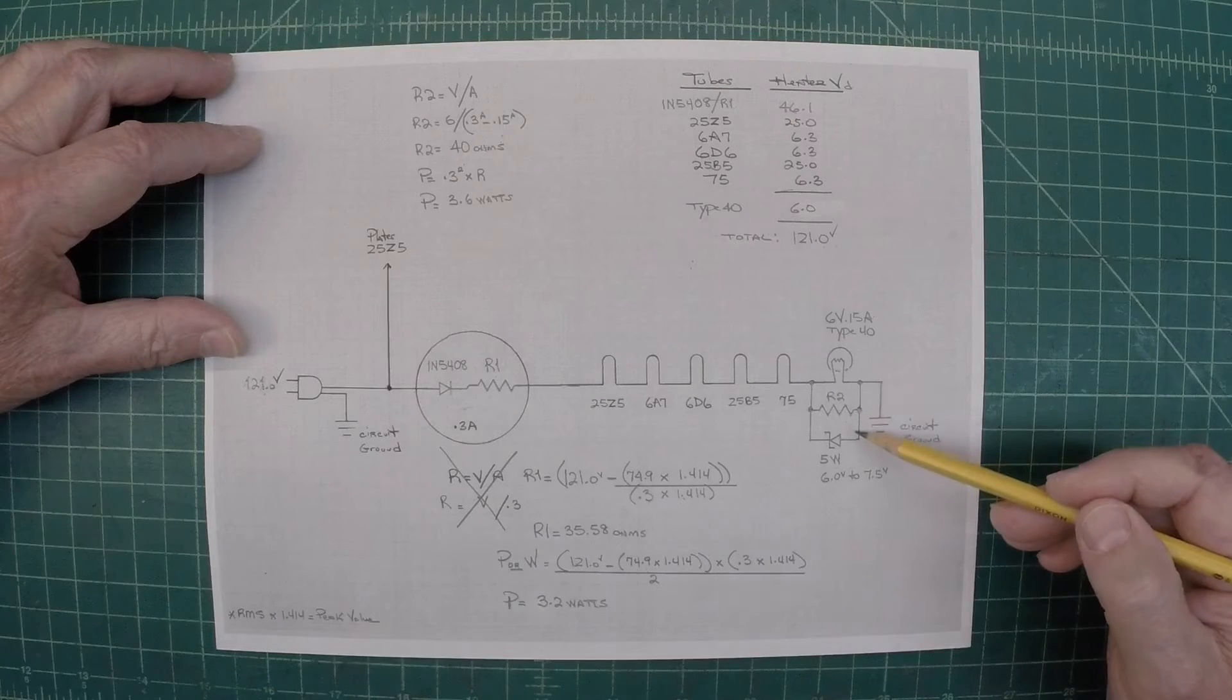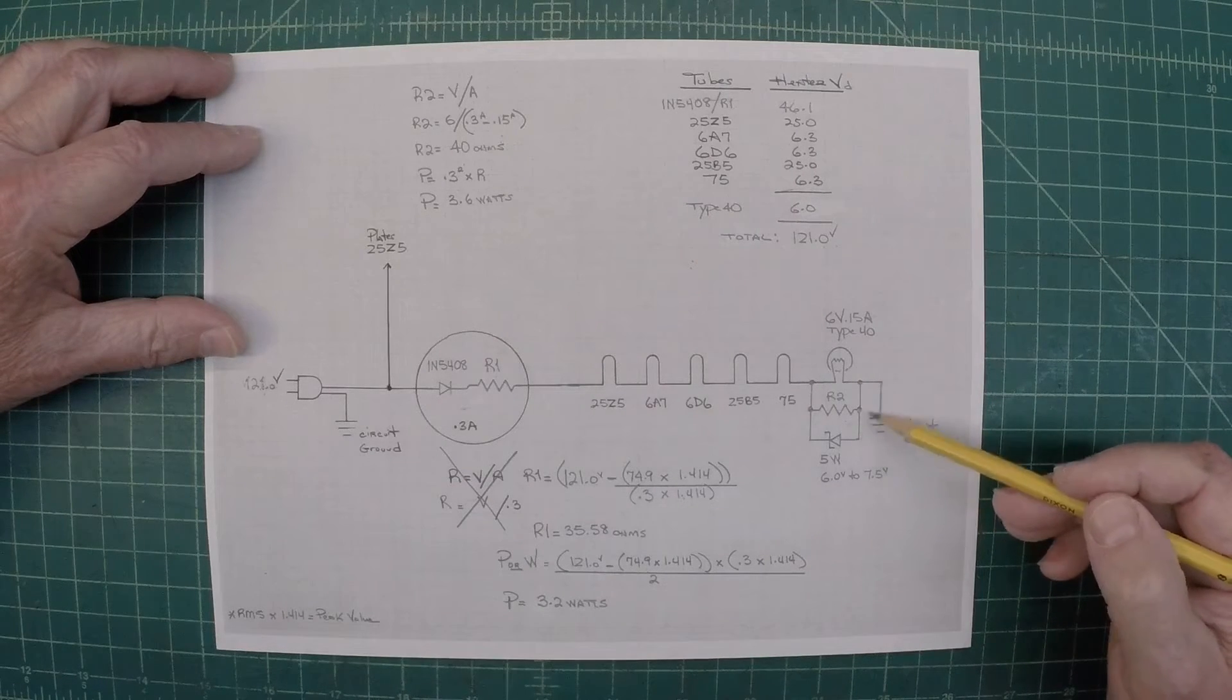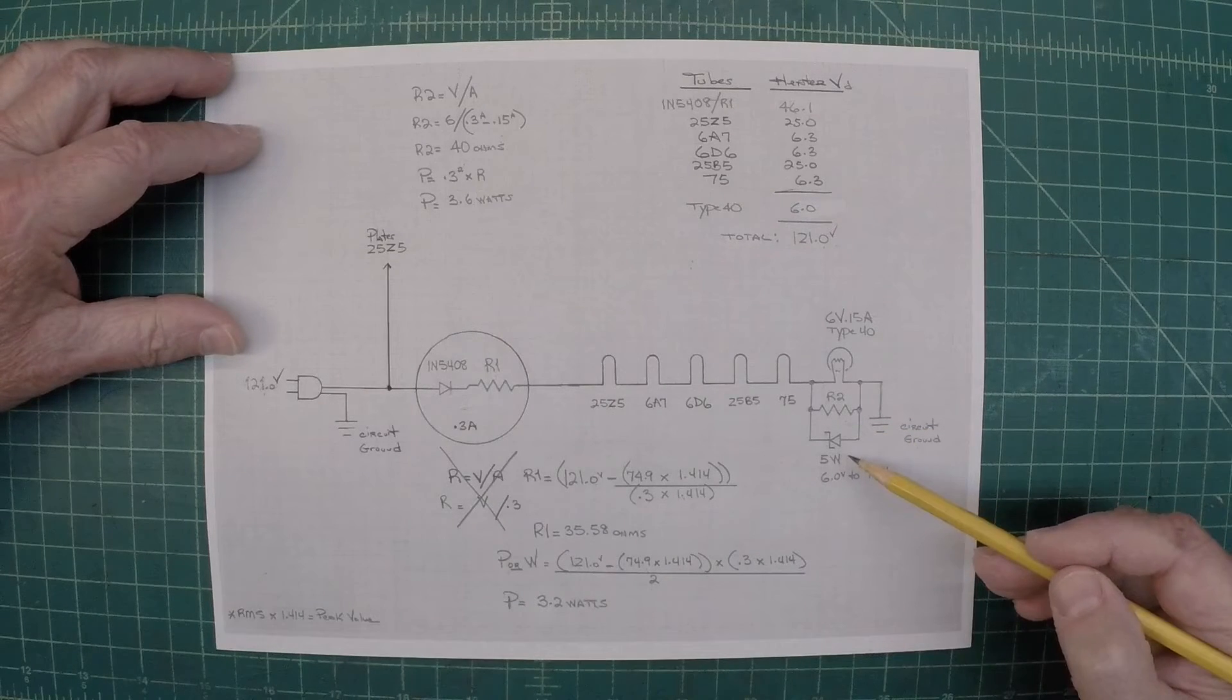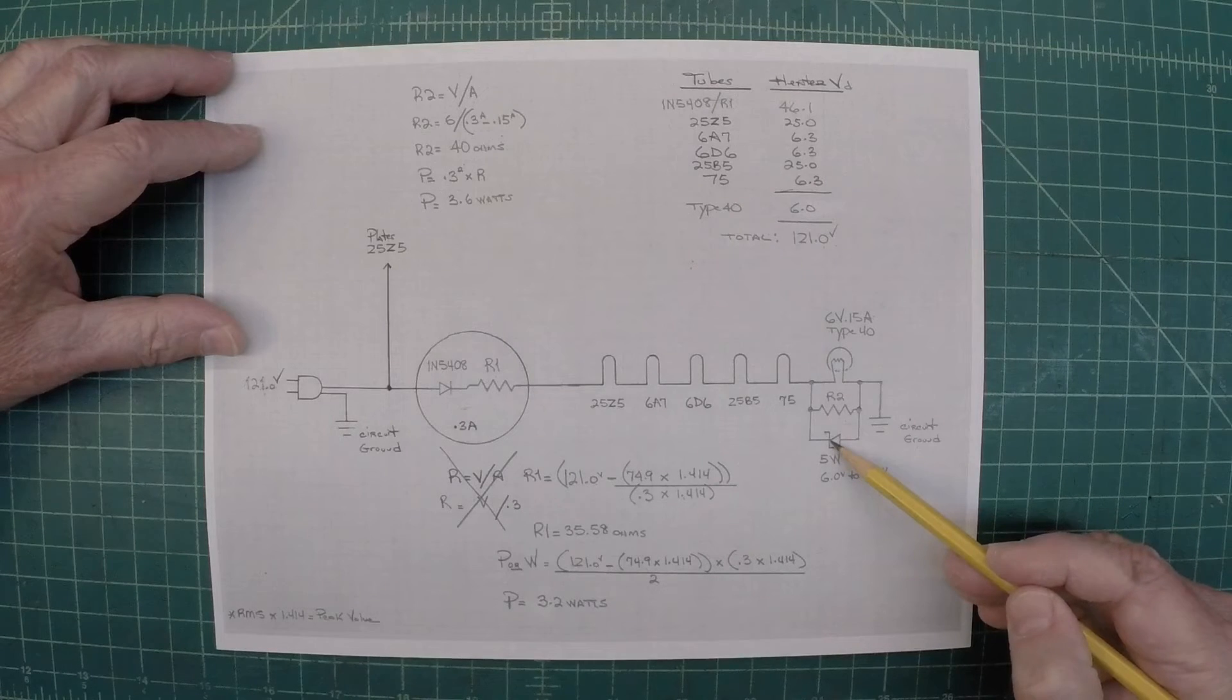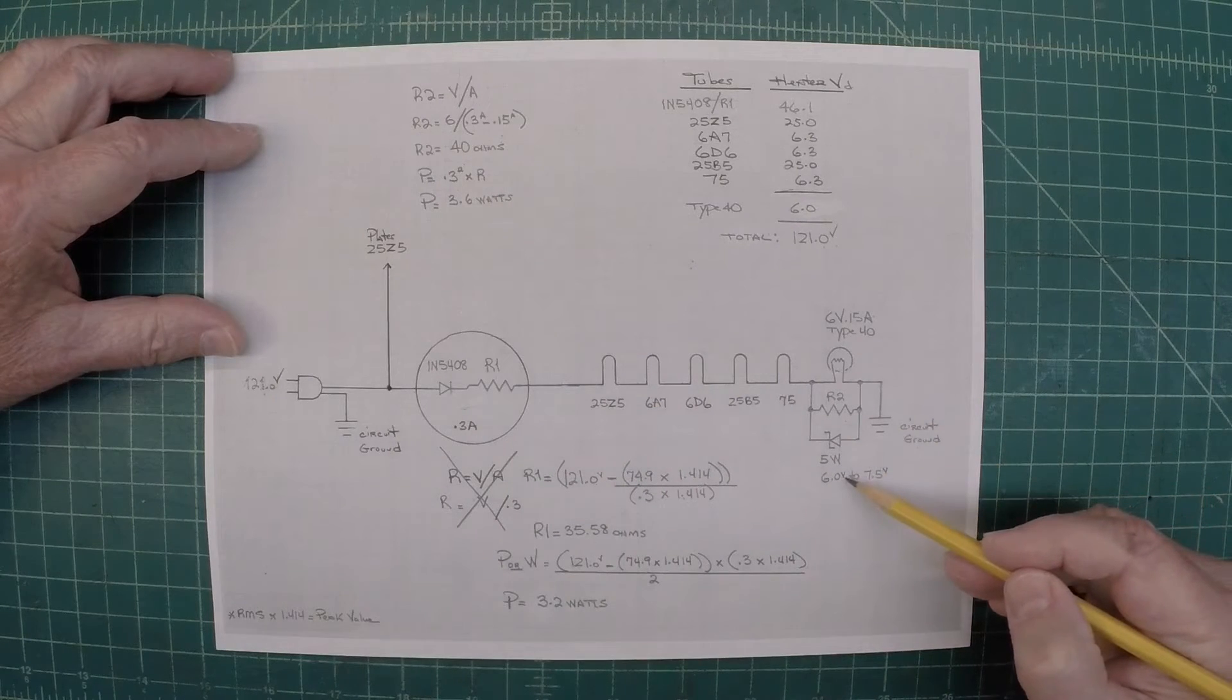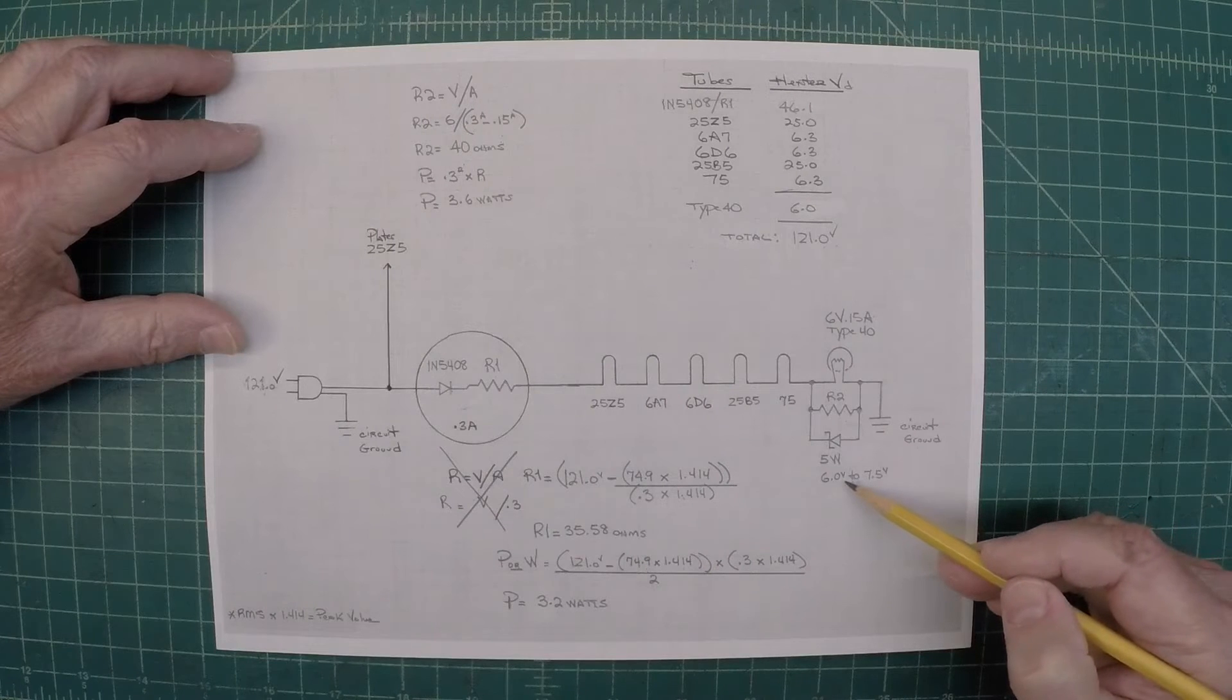You will notice one other addition I made. And sometimes I'll elect to just forego this, but I've put a Zener diode here. It's reverse biased. So you'll notice here, the diodes are facing each other. And I'm just using a 6 volt Zener diode that I had on hand.